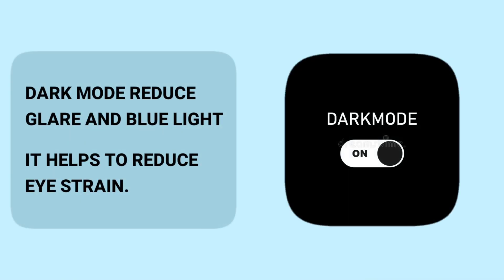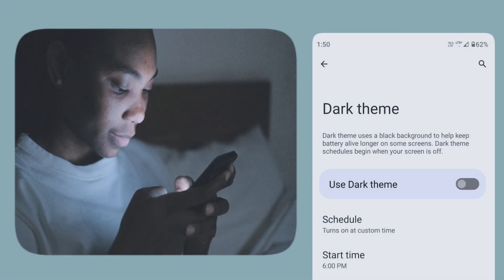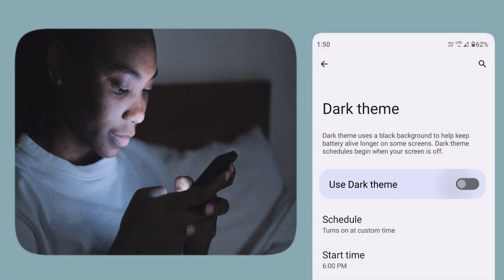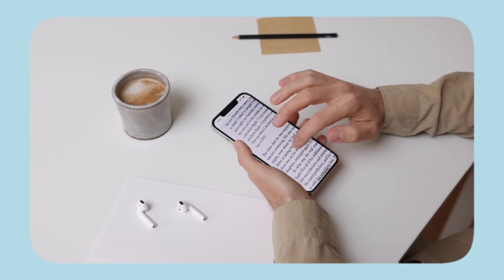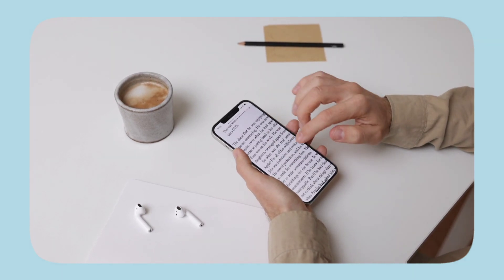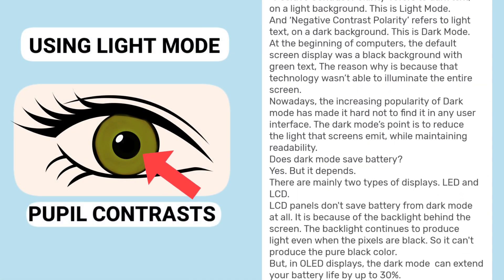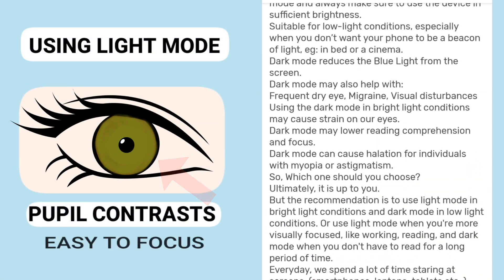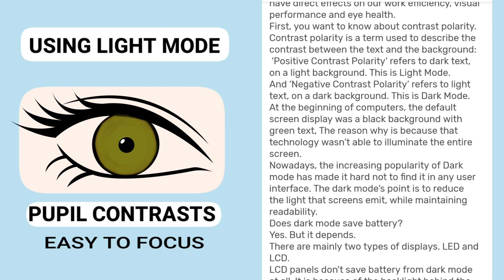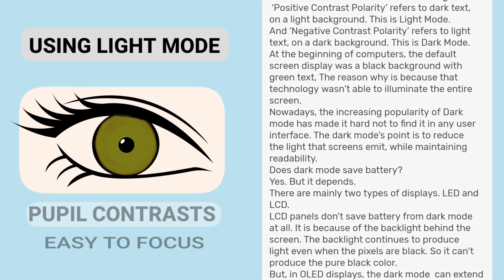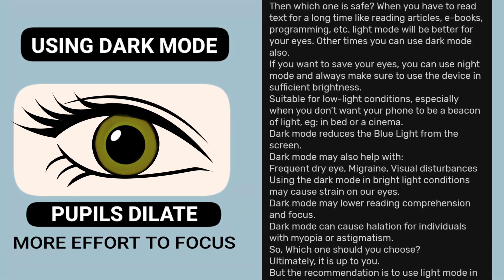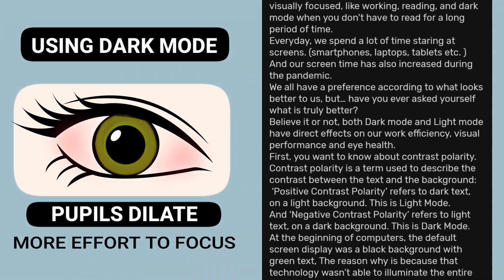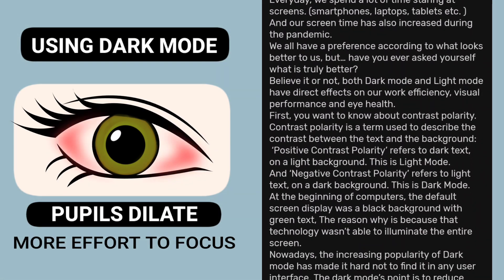By reducing glare and blue light, dark mode helps reduce eye strain. However, dark mode is not suitable for every situation. Light mode is always better for reading. When using light mode, our pupils contract, which makes it easier to focus on the whole thing. But when it is inverted, pupils will dilate, so our eyes have to put more effort to focus on individual objects, which can cause eye strain.